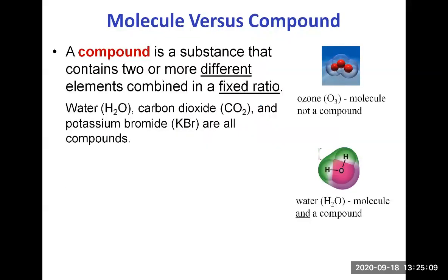Let's talk about what is a molecule versus a compound, because the confusion is easily made. A compound is a substance that contains two or more different elements combined in a fixed ratio. For example, water is a compound made of two hydrogens and one oxygen, formula H2O. Carbon dioxide is made of one carbon and two oxygens, formula CO2. Potassium bromide is KBr, made of potassium and bromine. All of these are compounds because they are made of two different types of elements set into a specific formula.